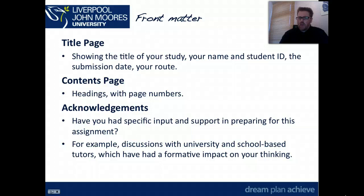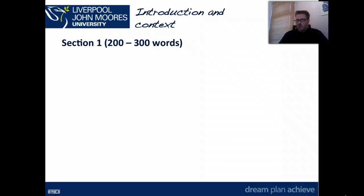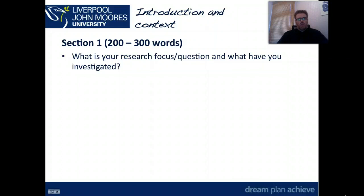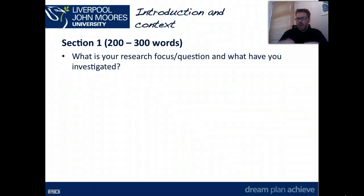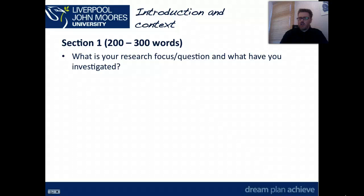Moving into the main sections, the first section — introduction and context — is quite brief, 200 to 300 words. In this section, you're going to say what your research focus or question is and what you've been investigating. Some of you will have a research question; in some cases there may be two or more questions, but you should make sure for clarity's sake that you have an overarching question. Anything that follows it is really unpicking and explaining the main research focus, and that could be explaining your title if your title is a very succinct and clear expression of what you're studying.